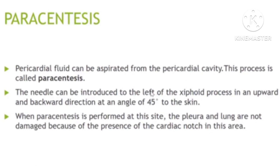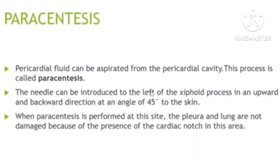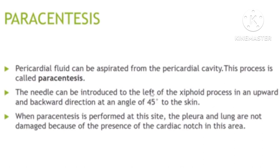In these conditions, a therapeutic procedure called pericardiocentesis can be performed to aspirate and drain the excess pericardial fluid. A needle is inserted to the left of the xiphoid process — the last part of the sternum — and directed upward and backward at an angle of 45 degrees to the skin, reaching the pericardial cavity to drain the fluid. This site avoids the cardiac notch, keeping the lung pleura out of the way.